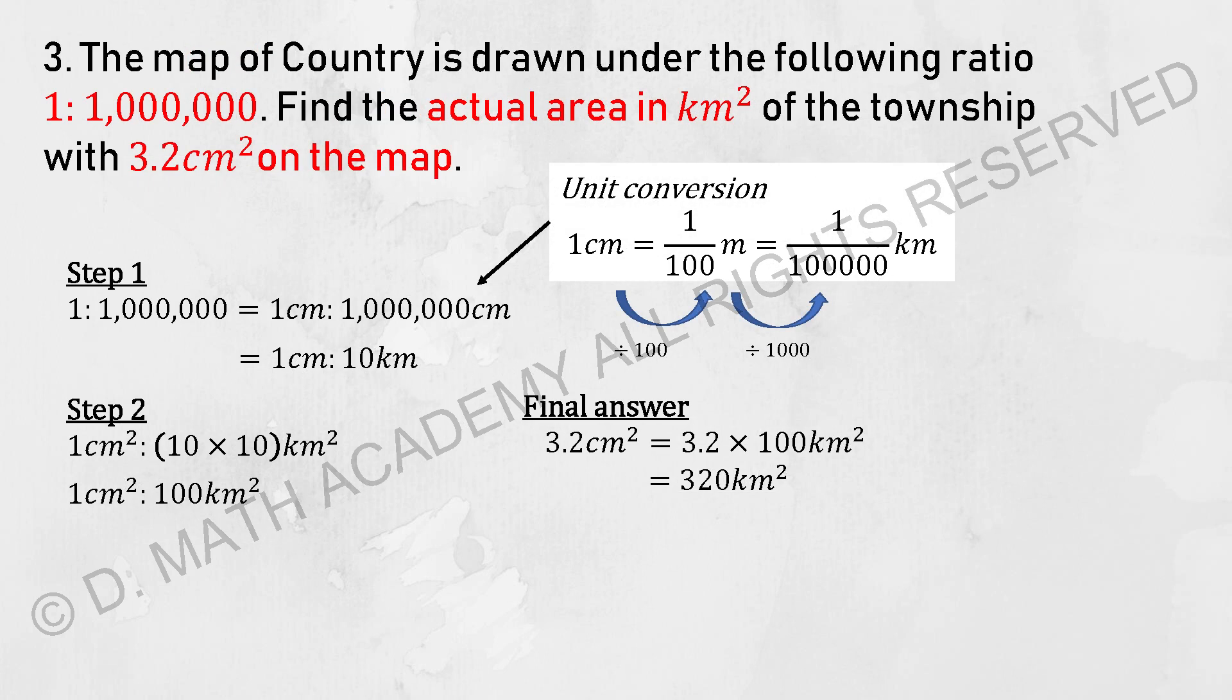Question 3 involves ratio on map drawing. First thing, they always give you a set of ratios. For example, for this third question here, we have 1 cm to 1 million. Find the actual area in kilometer squared of the township with 3.2 centimeters squared on the map. First thing first, you need to know 1 to 1 million is actually 1 cm to 1 million cm.